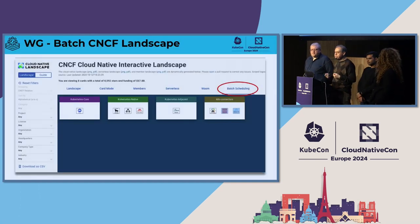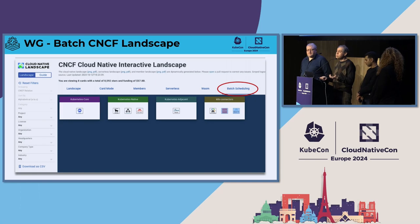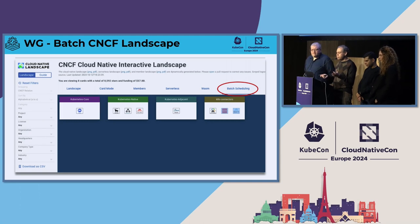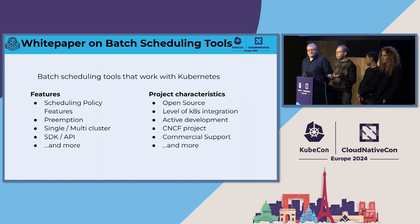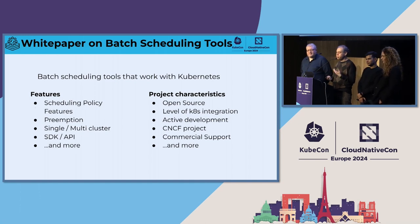Another working group is the Batch System Initiative Working Group, which focuses on large-scale batch workloads — very relevant to AI now, especially for training workloads. They created a landscape for these types of projects including Volcano, Armada, and Karmada, both related to orchestrating batch workloads. They've also created a white paper on batch scheduling tools, examining different features and characteristics about these tools and how they can be used for running workloads more efficiently.